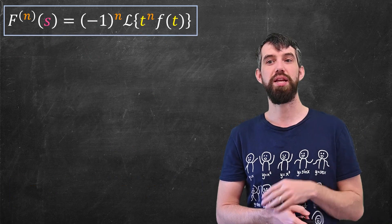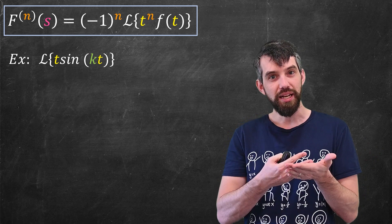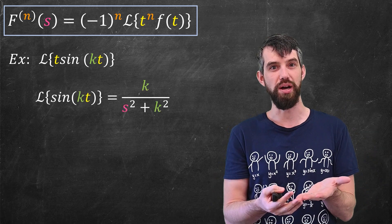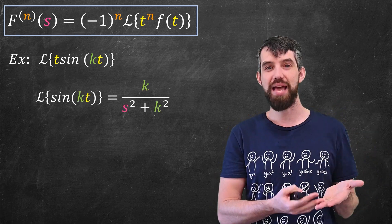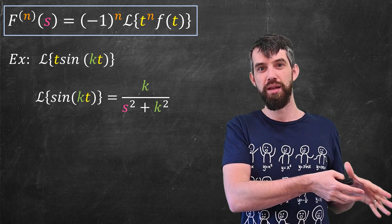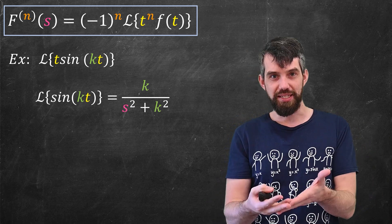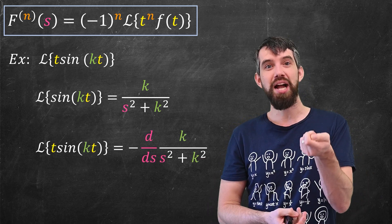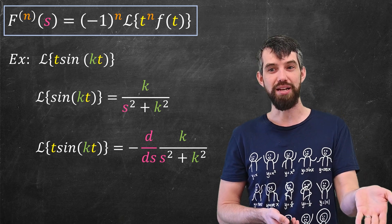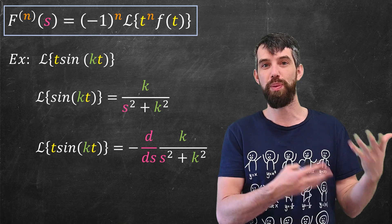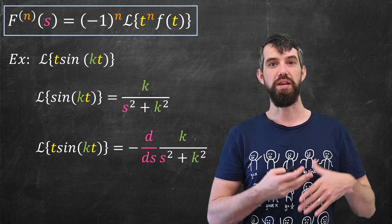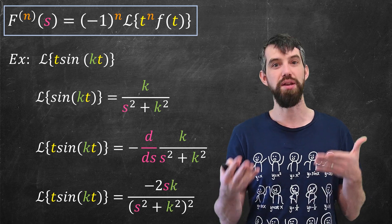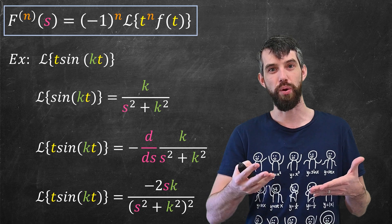Let's see a couple of examples. The first one is the Laplace transform of t times sine of kt. First, recall that the Laplace transform of sine(kt) is k divided by s² + k², as we've seen earlier in the series. The effect of multiplying by t — taking the Laplace transform of t·sin(kt) — is that there's a minus sign and then a derivative of the result previously had. So I get negative the derivative of k/(s² + k²). Computing that derivative gives minus 2sk divided by (s² + k²)².